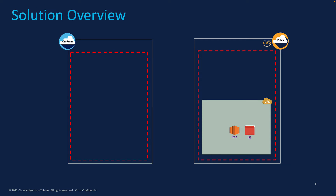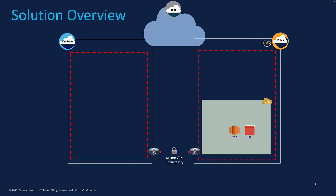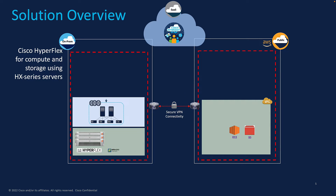The public cloud in the solution is AWS, with IPSec VPN providing secure connectivity between the two locations. The on-prem infrastructure is provided by Cisco HyperFlex, deployed and managed from the cloud using Cisco Intersight. Cisco HyperFlex delivers a production-ready, enterprise-class virtual server infrastructure with software-defined compute and storage, and the complete HyperFlex cluster is deployed from Cisco Intersight using a fully automated process.